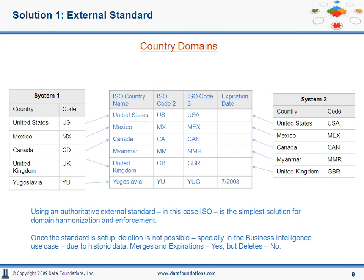Here's one solution. The easiest approach is to use an authoritative external standard for the domain, if one exists. In this example, that standard is ISO 3166-1. This eliminates the burden of defining the standard list. Keep in mind that mergers and expiration are okay, but deletions are not possible once a standard list is defined, especially in the context of business intelligence, since historic data already exists.